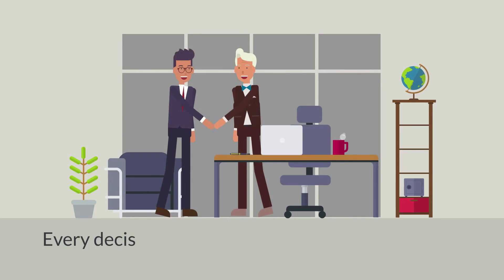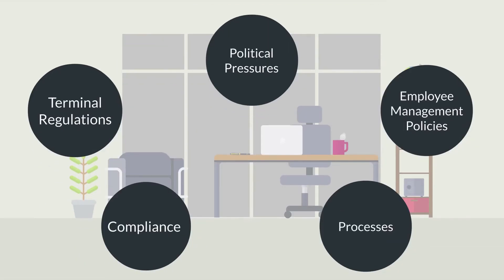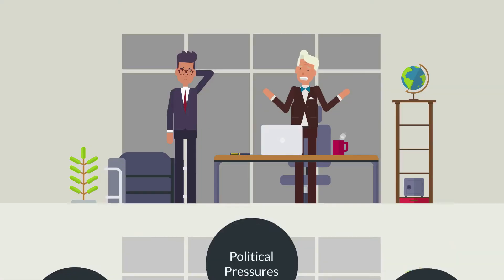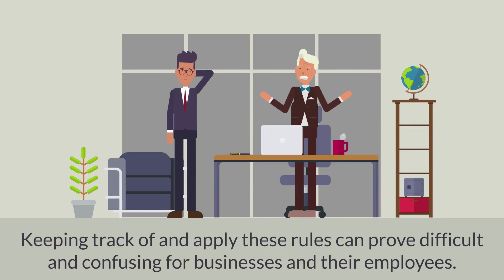Every decision taken by a business or its employees is based on a complex system of internal and external rules. These rules can be determined by a number of internal factors, like company processes or employee management policies, as well as bigger external factors like trading standards and laws. Keeping track of and applying these rules can prove difficult and confusing for businesses and their employees.